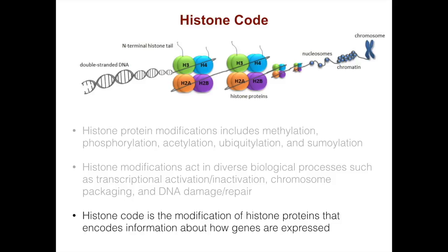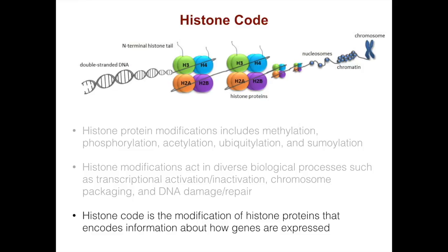The histone code is the modification of histone proteins that encodes information about how genes are expressed. An important technique in understanding how chromatin state affects transcription is chromatin immunoprecipitation. During chromatin immunoprecipitation, or ChIP, DNA binding proteins and DNA are cross-linked, so the DNA and these proteins are stably attached to each other.